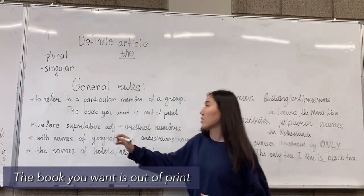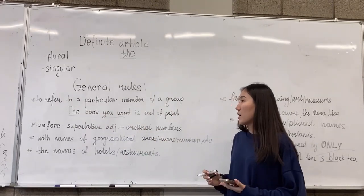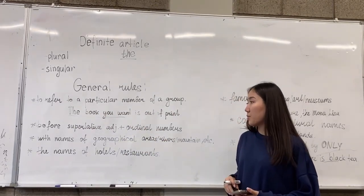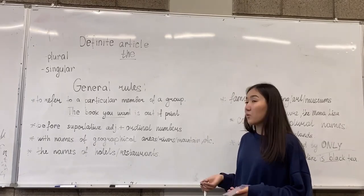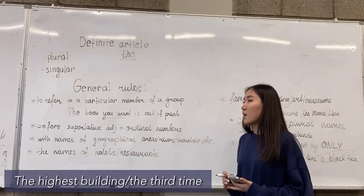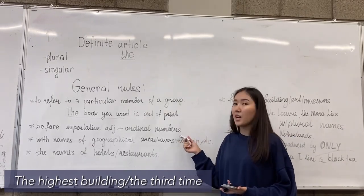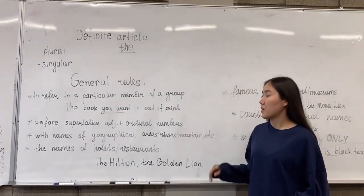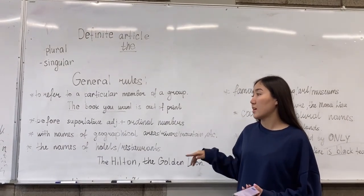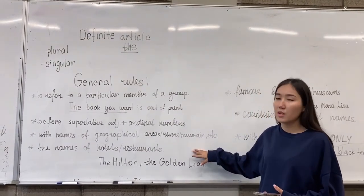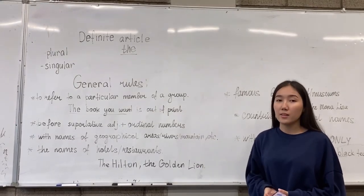We use the definite article before superlatives and ordinal numbers. For example: 'the highest building in New York.' We use the definite article with proper nouns, and with names of geographical areas, rivers, mountains, or islands. For example: 'They are travelling in the Arctic.'